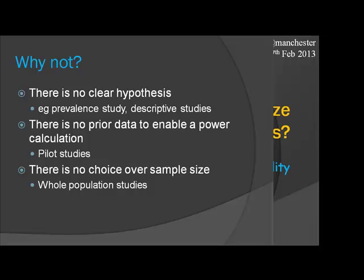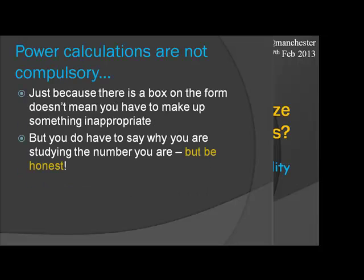Sometimes you have no choice over how many people you use — if you're doing everybody, you're doing everybody. It's arguably a waste of time worrying about sample size if you haven't got any chance of changing it. But if you're trying to get funding, you might still want to justify that with the population you've got it might be worth doing. Just because there's a box on the form doesn't mean you have to make something up. If you can't do it, you can't do it — but you do have to say why you've chosen the sample size you have.